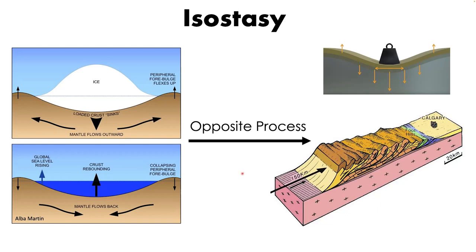We can think of the emplacement of a fold and thrust belt as essentially the opposite process to the removal of a glacier. We're stacking a whole bunch of rock, getting kilometers of thickening, which is heavy and imposes a load on the lower crust and mantle, prompting its own isostatic response.